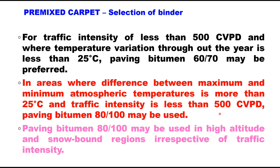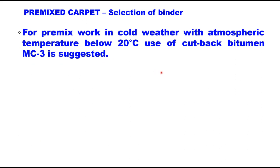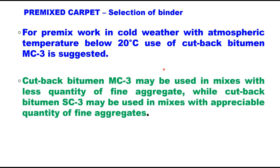Paving bitumen 80/100 may also be used in high altitude and snow-bound regions irrespective of traffic intensity. Premix work in cold weather with atmospheric temperature below 20°C may be done using cutback bitumen MC3 (medium curing grade 3). Cutback MC3 is used in mixes with less quantity of fine aggregate, whereas cutback SC3 (slow curing grade 3) may be used in mixes with appreciable quantity of fine aggregates.